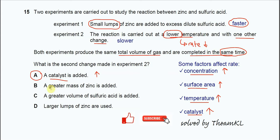Why B cannot? A greater mass of zinc is added - greater mass of zinc means the volume of these two experiments might be different. C also cannot - a greater volume of sulfuric acid, but the sulfuric acid is already in excess, so adding a greater volume will not really change anything.